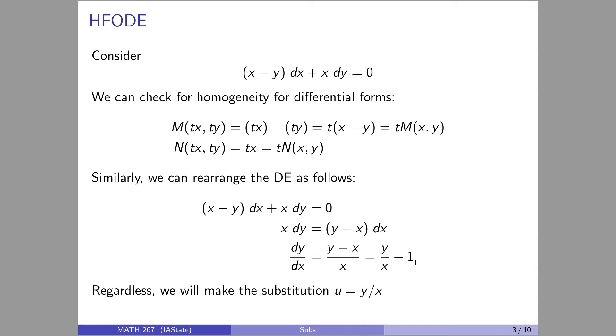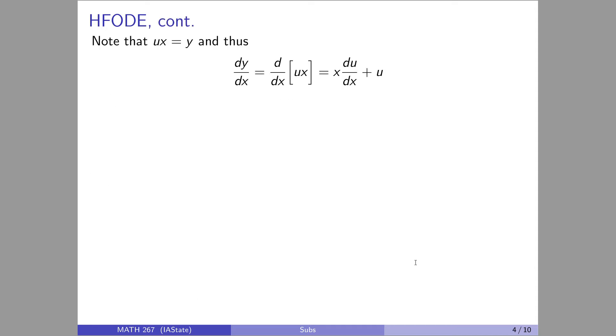Alright, so if we let u equals y over x, that means that u times x is equal to y. That would mean that the derivative of y with respect to x coincides with the derivative of u times x. U is a function of x. So when we take the derivative of that, product rule, derivative of the first times the second plus derivative of the second times the first, which is equal to this. So plugging that back into the DE then gives me x times du dx plus u. That's dy dx. dy dx, recall, is y over x minus one. That would then turn into u minus one, and conveniently, there's a u and a u, so they cancel.